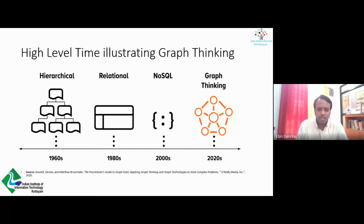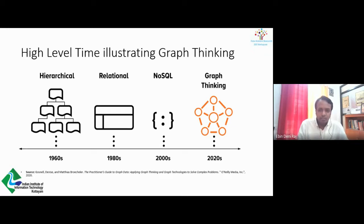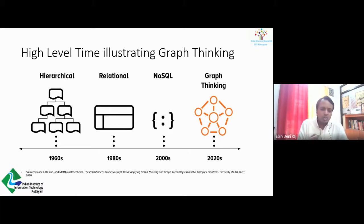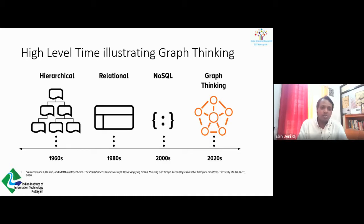Across all these different eras, there is a proven, observable time lag between early adopters and wide adoption of new technologies. We saw that lag from 1980 to 2000 with ER databases, and similarly with hierarchical thinking earlier. History has shown us that every era prior to the graph era contained a niche period that saw wide adoption years later. Looking into the 2020s, we're making this assumption about the state of the graph market.